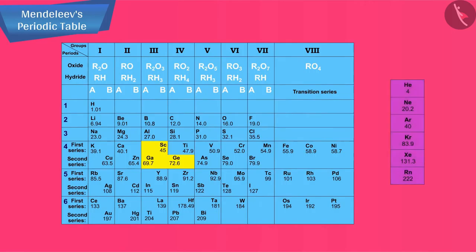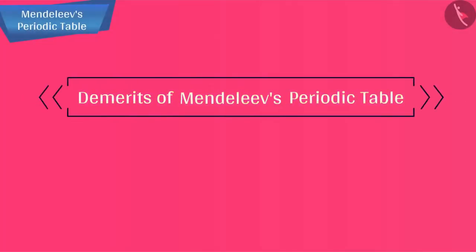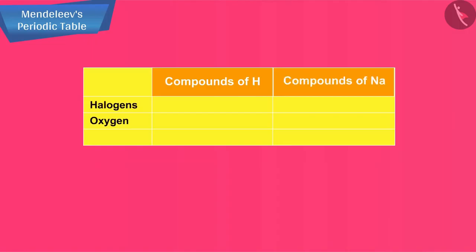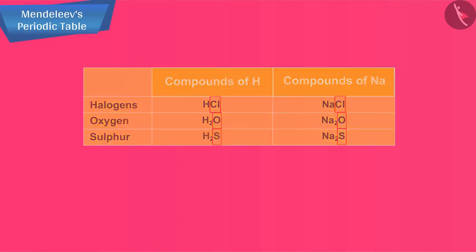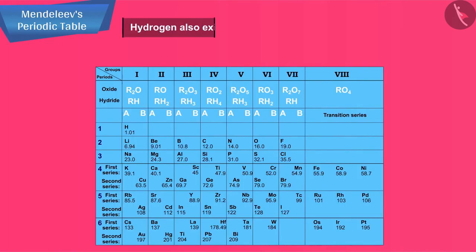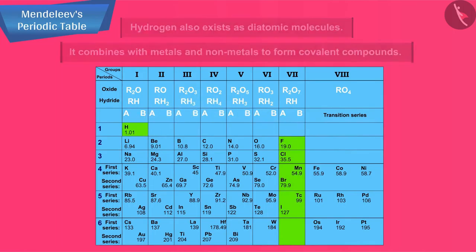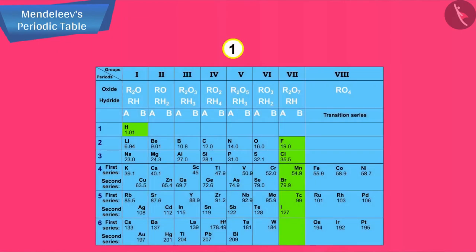Let us now discuss the limitations of Mendeleev's classification. Electronic configuration of hydrogen resembles that of alkali metals. Like alkali metals, hydrogen combines with halogens, oxygen, and sulfur to form compounds having similar formulae. On the other hand, just like halogens, hydrogen also exists as diatomic molecules and it combines with metals and non-metals to form covalent compounds. No fixed position can be given to hydrogen in the periodic table. This was the first limitation; he could not assign a correct position to hydrogen in his table.